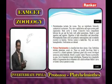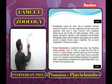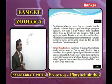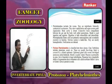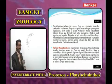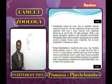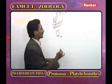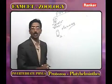In Platyhelminthes, the body is dorso-ventrally flat, so these animals are popularly known as flatworms. The alimentary canal is saccular and has only a mouth — the mouth itself acts as anus. But in some examples the alimentary canal also has an anus (complete alimentary canal). The characteristic cells of Platyhelminthes are flame cells, also called protonephridia.